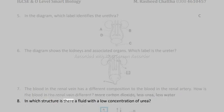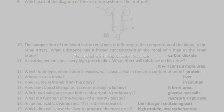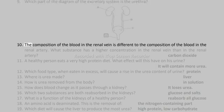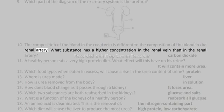8. In which structure is there a fluid with a low concentration of urea? 9. Which part of the diagram of the excretory system is the urethra? 10. The composition of the blood in the renal vein is different to the composition of the blood in the renal artery. What substance has a higher concentration in the renal vein than in the renal artery?